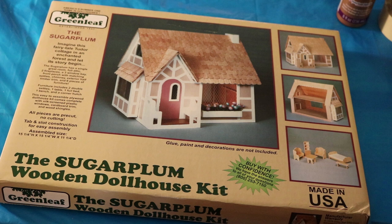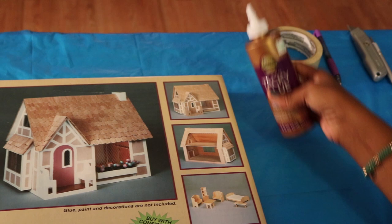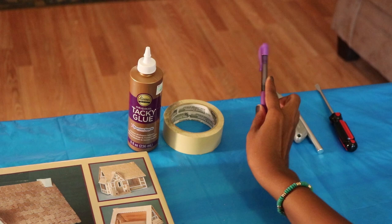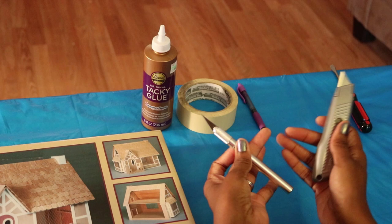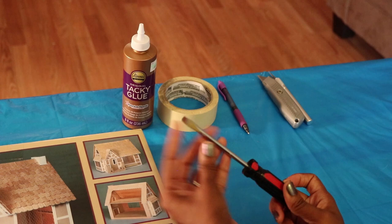Things you'll need are of course the dollhouse kit which I got at miniatures.com. They have lots of neat accessories and furniture for your dollhouse. You'll also need Eileen's tacky glue, masking tape, something to write with, a utility knife or a craft knife for trimming tabs if needed, and a flathead screwdriver to help you punch out pieces.